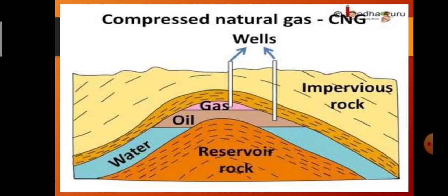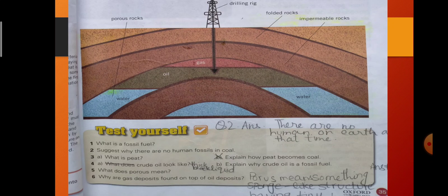Above the oil deposit there is natural gas, which we use for cooking and different purposes. The layer above is impervious rock, which does not allow gas to leak from this portion of the earth. When we need to extract the gas, we use drilling machines to make a hole on the surface of the earth, and we pump out gas, oil, and water by forming wells on the deposits.